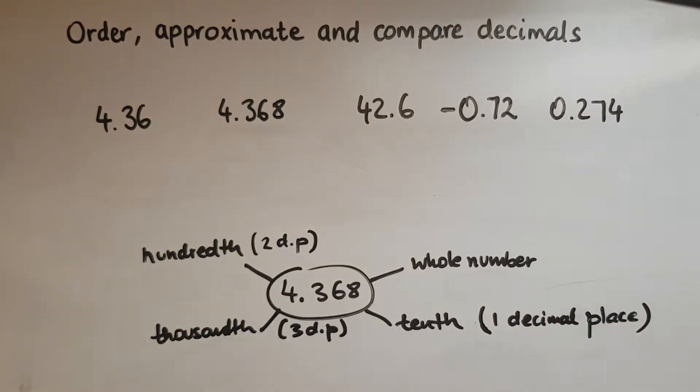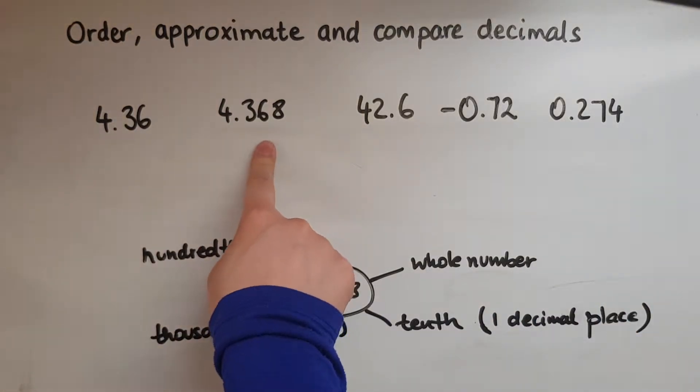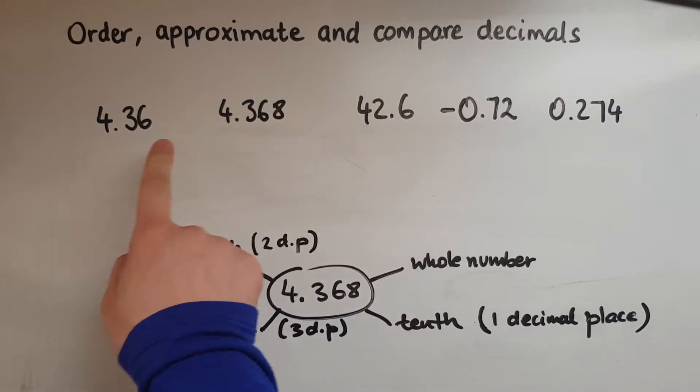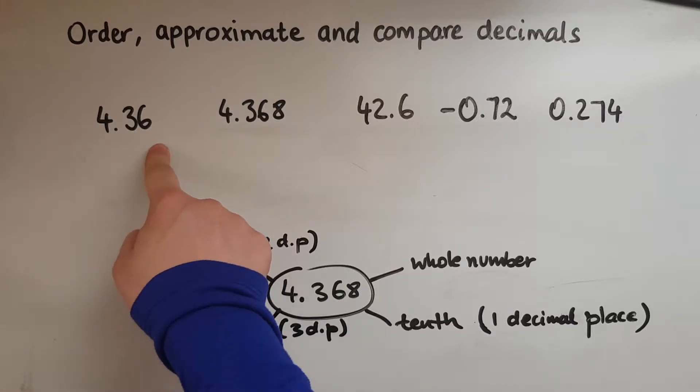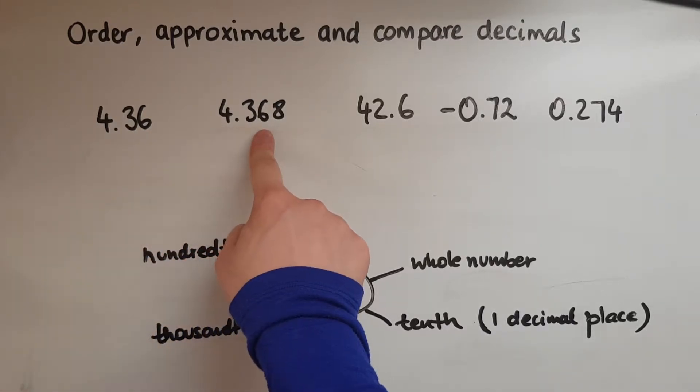So I'll compare them. If I'm to compare these two, which one would be the biggest one? So this is 4.36, and if it was money would be £4.36, whereas this would be £4.36 and also 8 tenths of pennies.